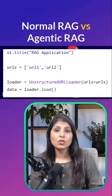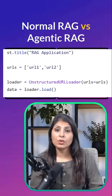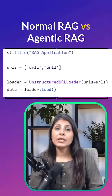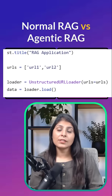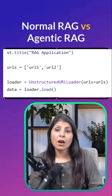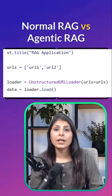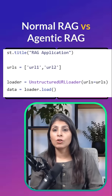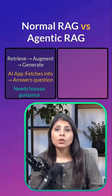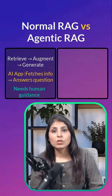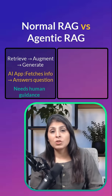Here is a screenshot of RAG being used in an LLM-based app. We are providing the external sources ourselves — meaning we are telling our app to fetch the latest or new information from an external source. So RAG needs a human to guide it step by step.